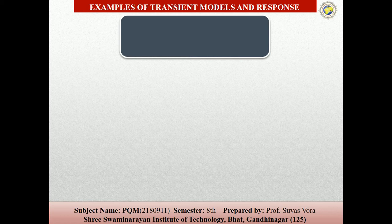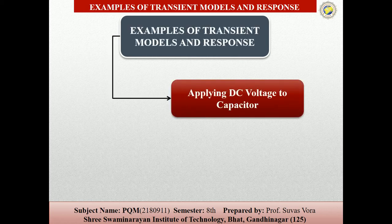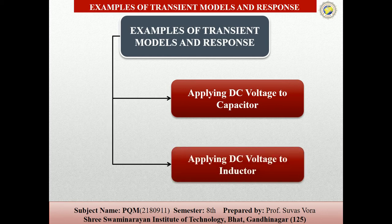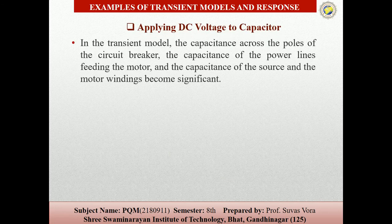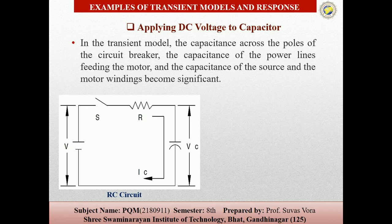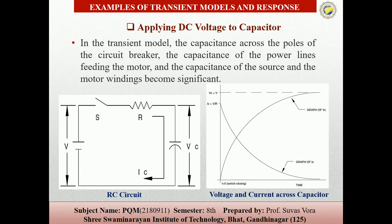We can see the examples of the transient model response: the first one is applying the DC voltage to the capacitor and applying the DC voltage to the inductor. The capacitance across the poles of the circuit breakers and the capacitors of the power lines feeding the motors — we can see that the power line capacitor is connected across the sources. Because of these capacitors, the source and the motor winding become significant. These are the graphs of the voltage and current for capacitors.